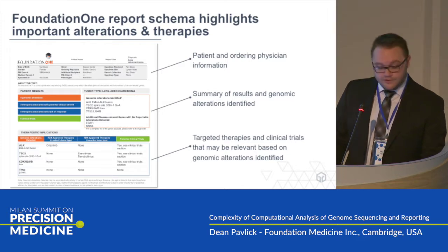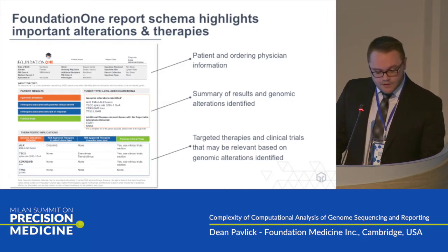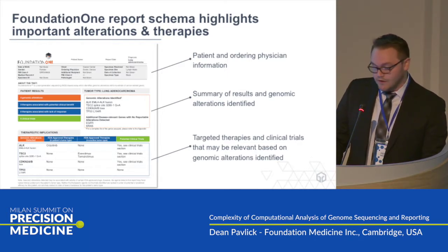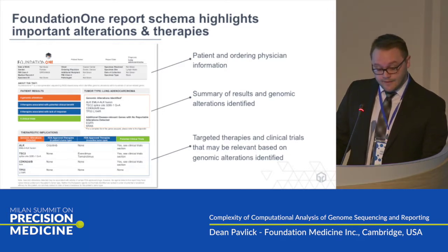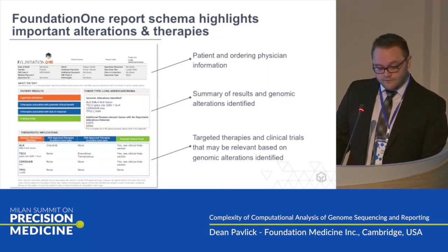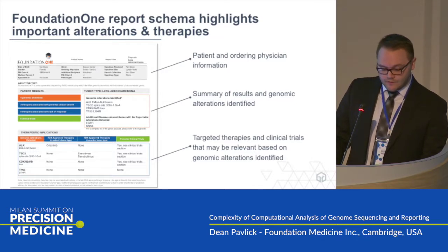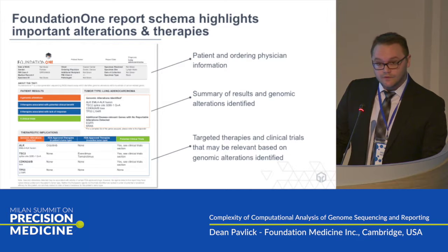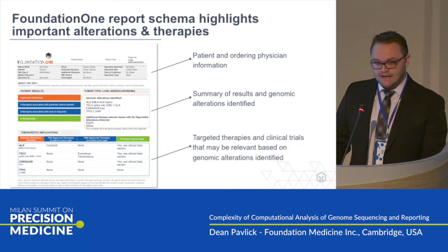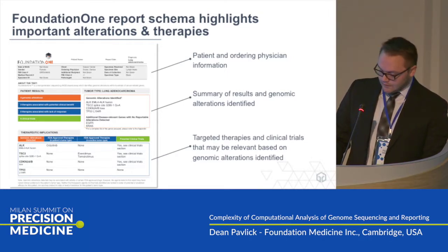Here's an example of the first page of a Foundation One report. At the top, patient information is outlined. The alterations that we believe to be functionally relevant are summarized in the middle, while the variants of unknown significance — those VUSs — are outlined on the back page. Connections between detected variants and potential therapeutic options, including on- and off-label FDA-approved therapies as well as active clinical trials that may be relevant, are summarized towards the bottom. It's important to note that the scientific rationale for these connections is extensively outlined on the subsequent pages — so if you have an FMI report, please continue to read past the first page.